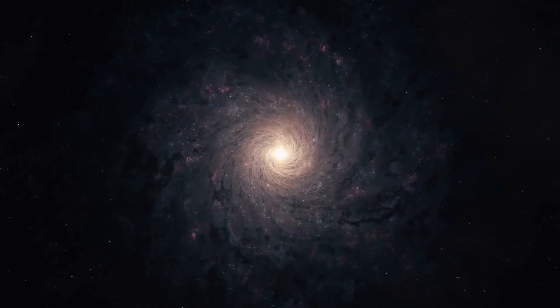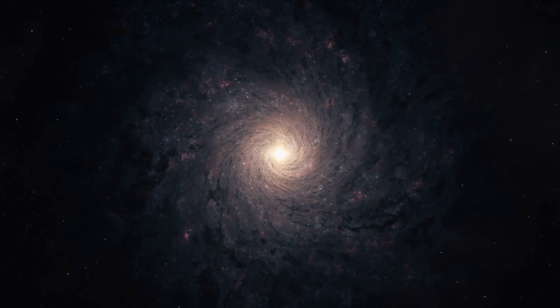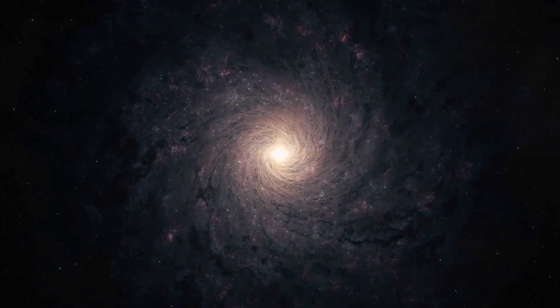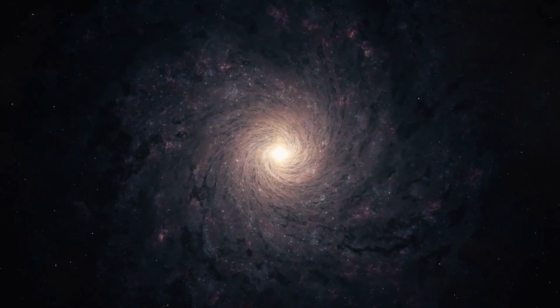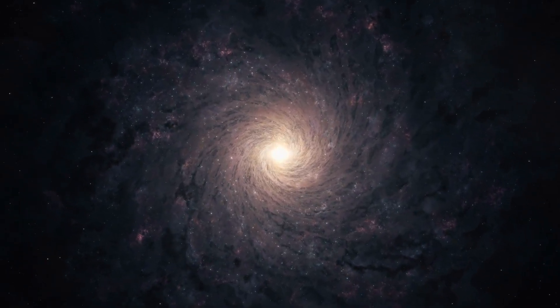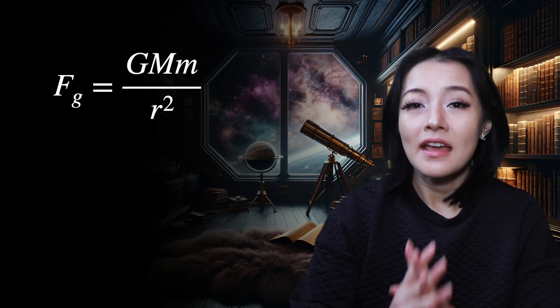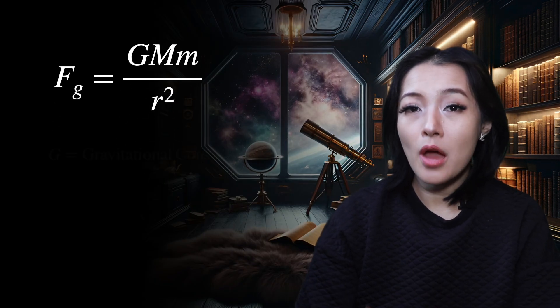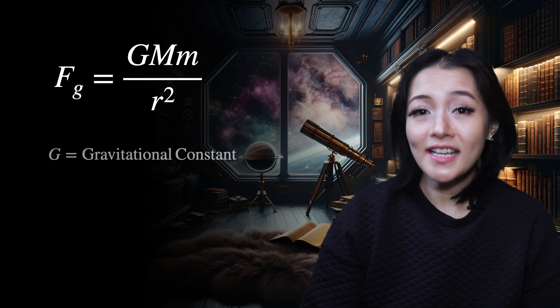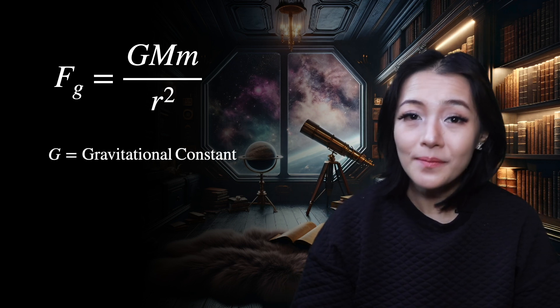Imagine a merry-go-round: near the center, objects go around faster compared to those on the outer edge, because they're bound by a tighter gravitational pull. Now, if we apply this concept to galaxies, we would expect that the stars farther out from the center should orbit slower than those close to the core. Can we prove this with maths? Sure.